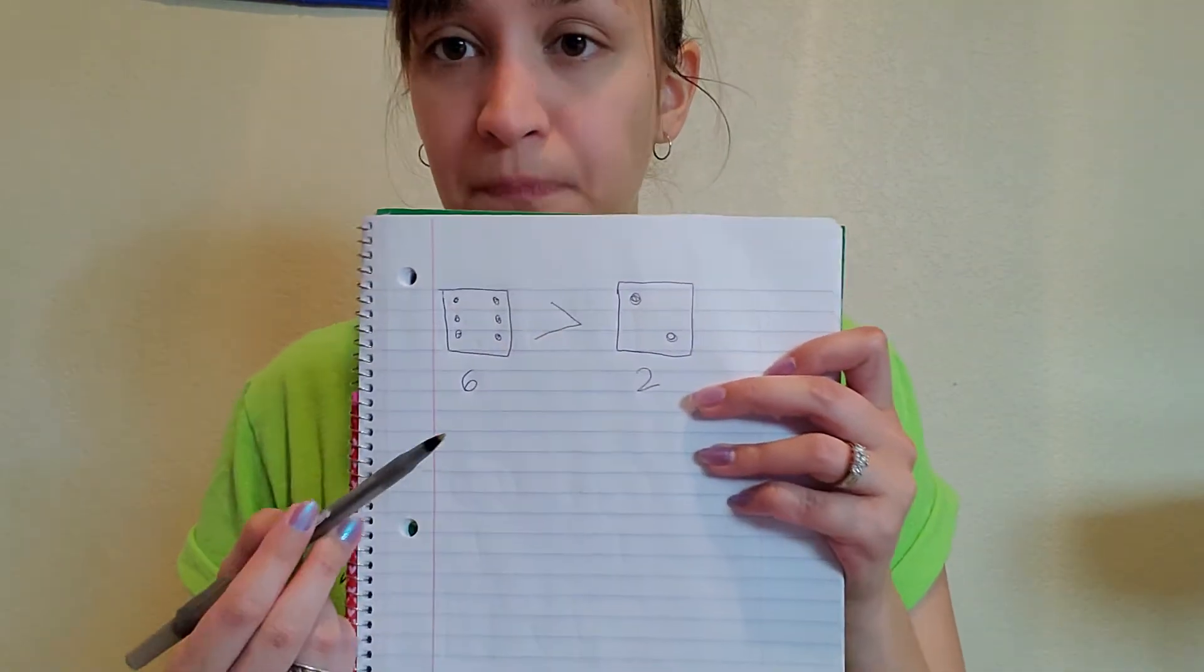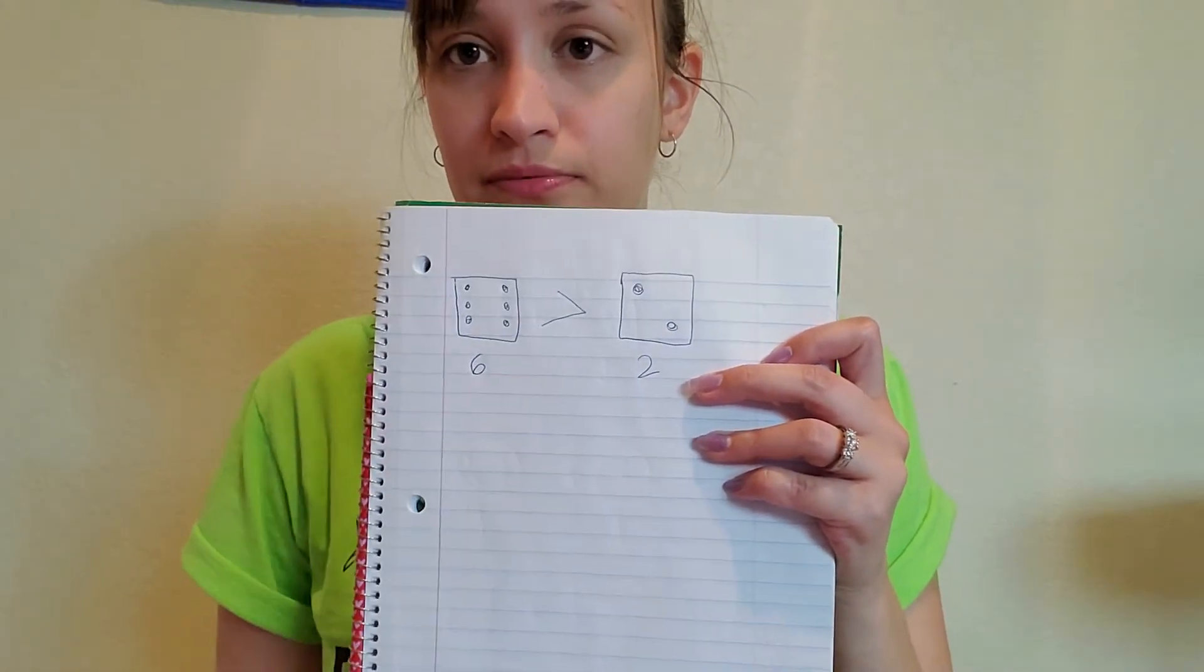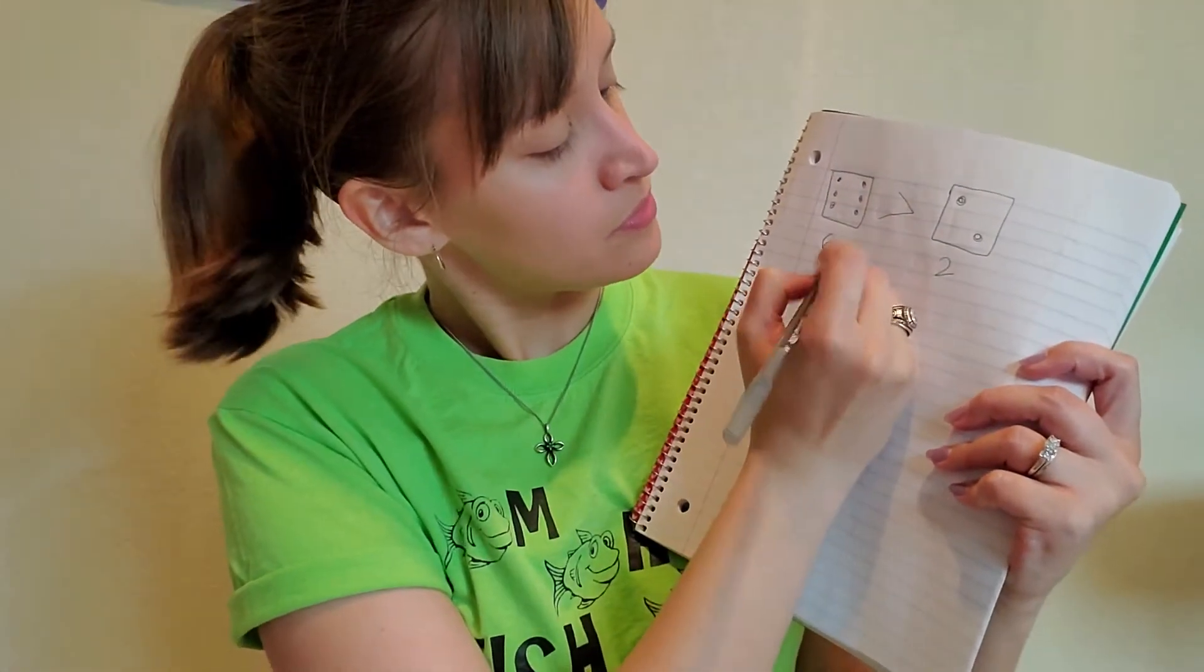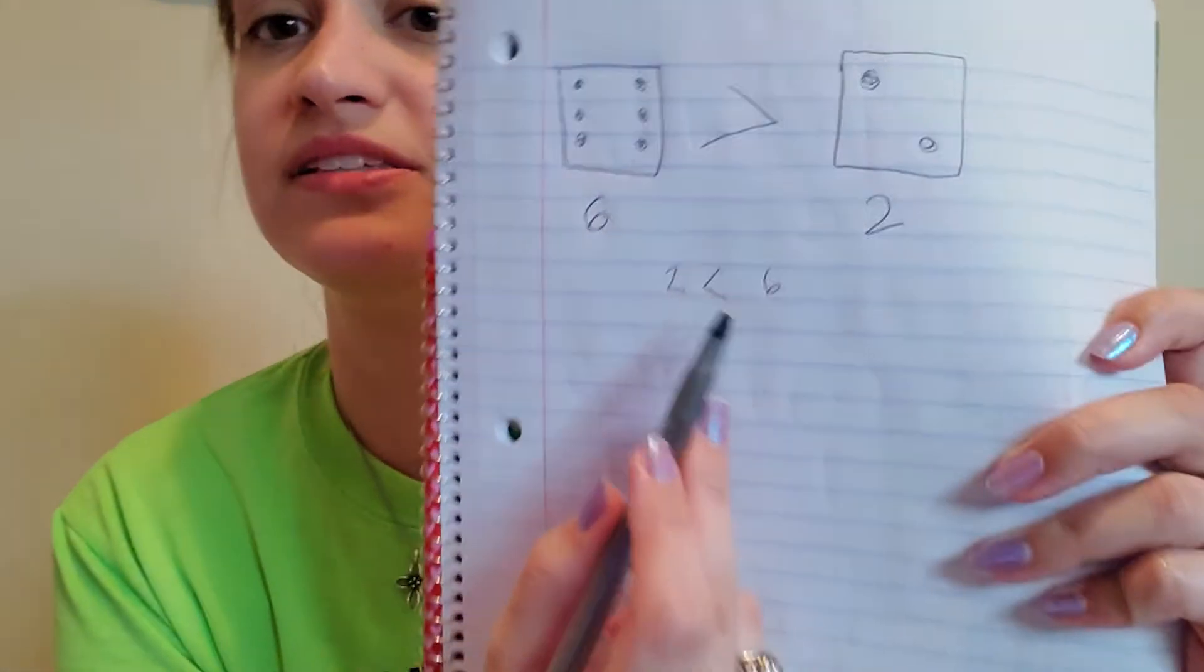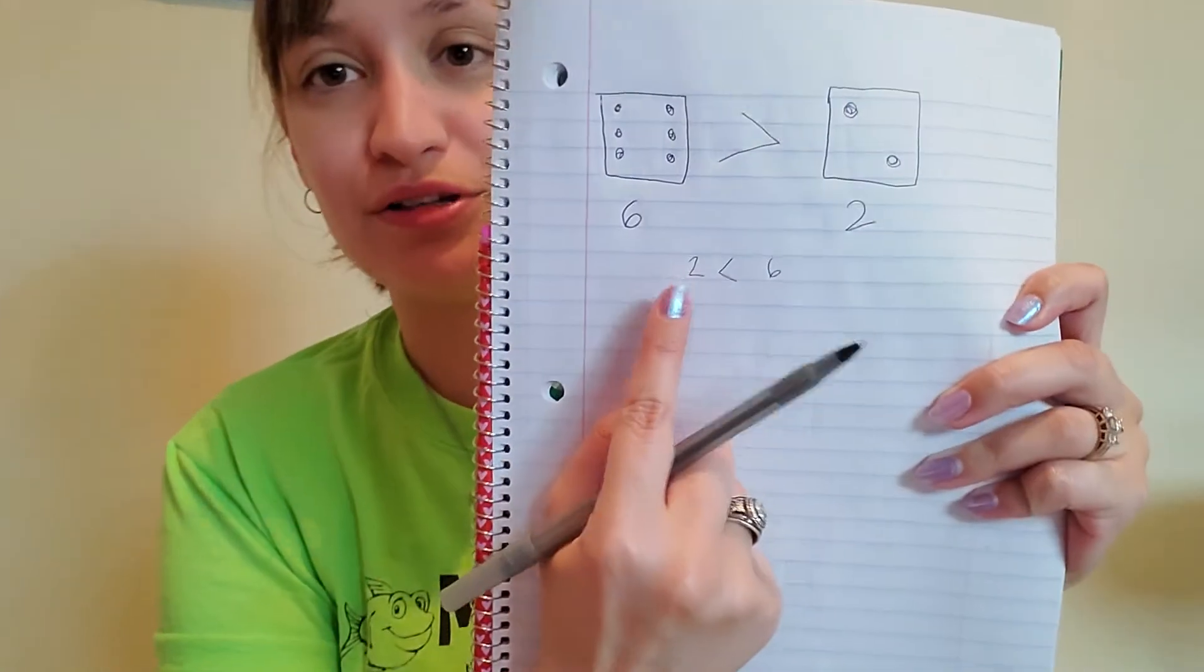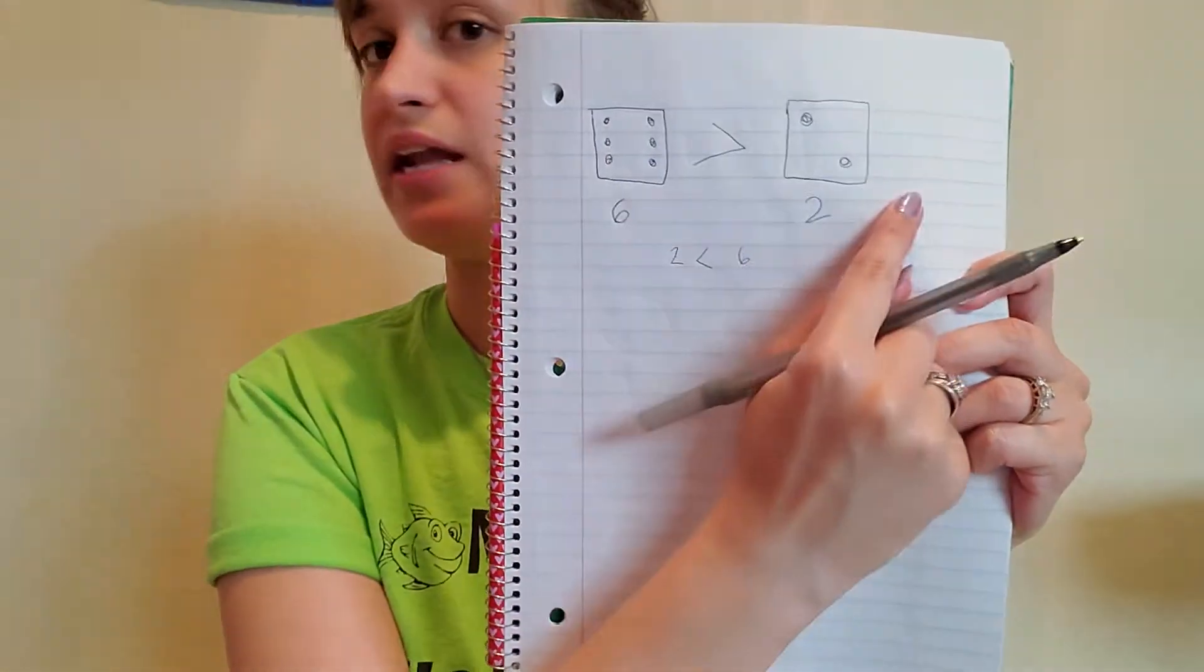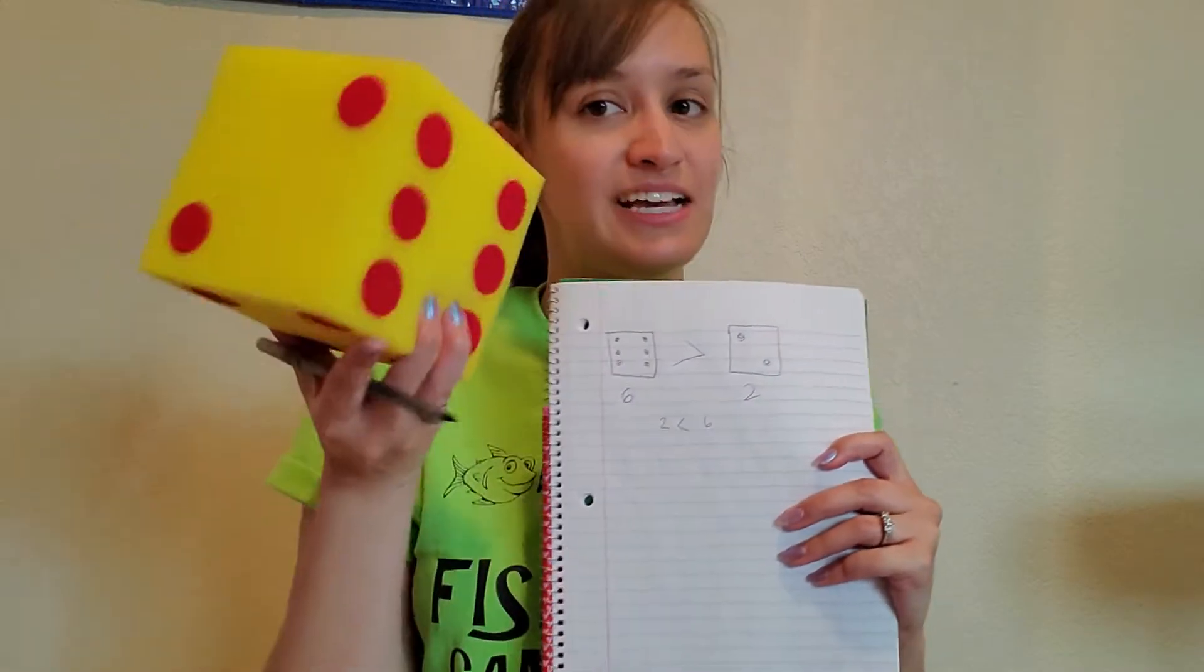So read it. Six is greater than two. If you want to swap it around, two is less than six. You're still grabbing the six, but now you're swapping the numbers around. Two is less than six. Always read it left to right, never read it backwards. So that was the dice way.